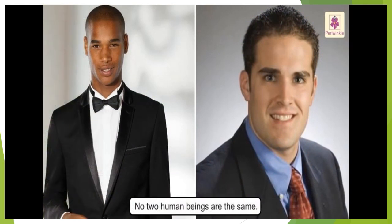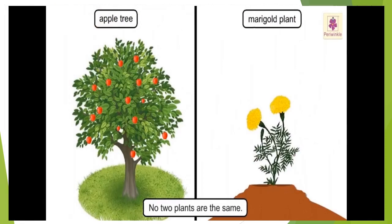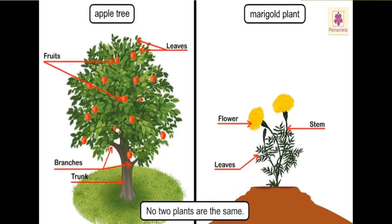Children, we are all different from each other — just as no two human beings are the same, plants are also not the same. They are different like us. Like us, even plants have different parts, and each part has its own function.